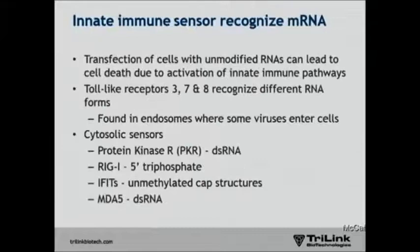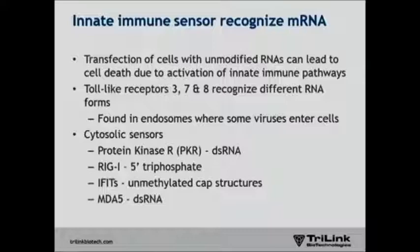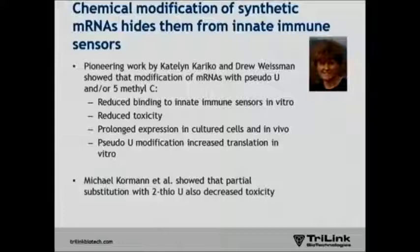There are a number of innate immune pattern recognition receptors that recognize RNAs. For example, toll-like receptors 3, 7, and 8 recognize RNAs and those are predominantly found in endosomes. There's also a series of cytosolic sensors such as PKR, RIG-I, IFITS, and MDA5 that also recognize aberrant RNAs inside the cell.